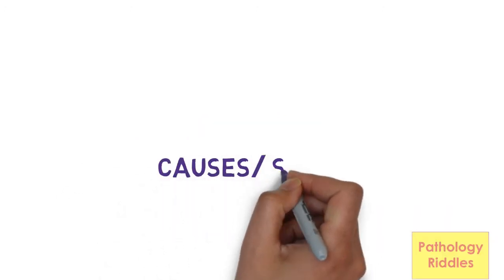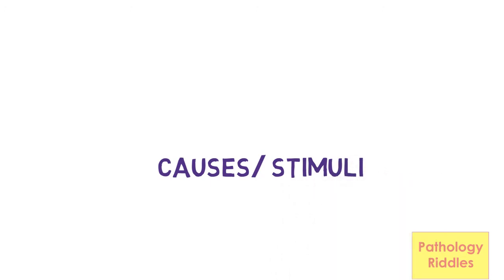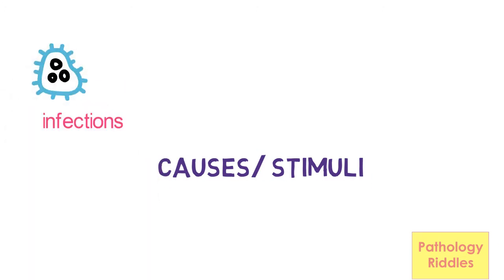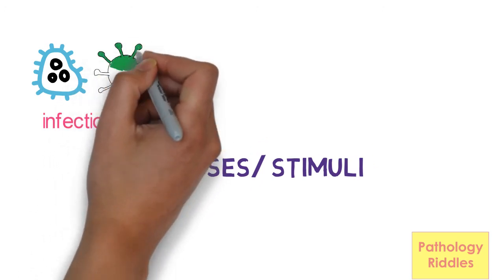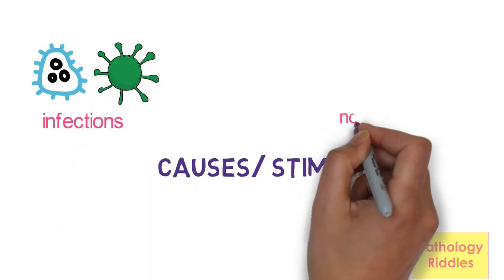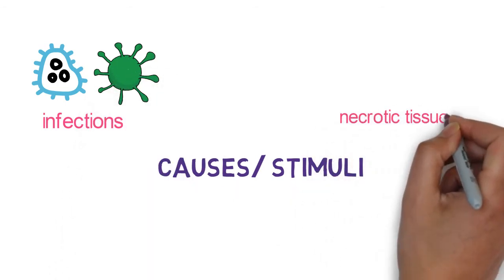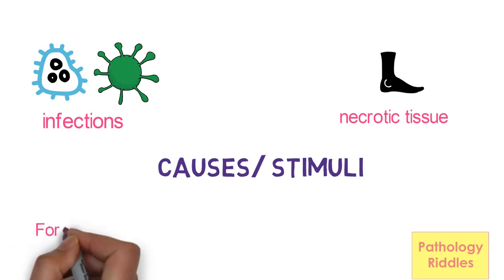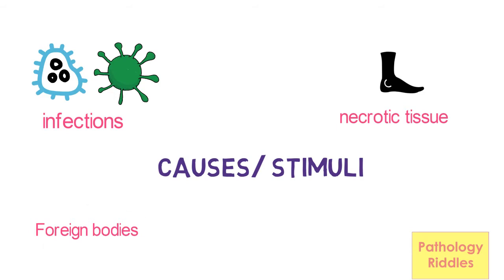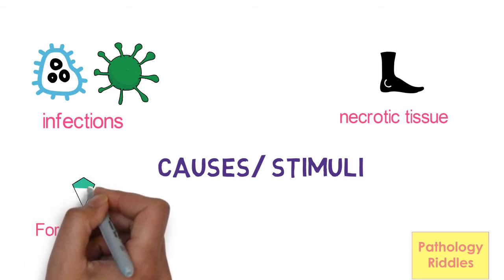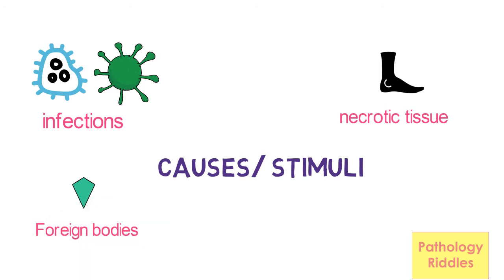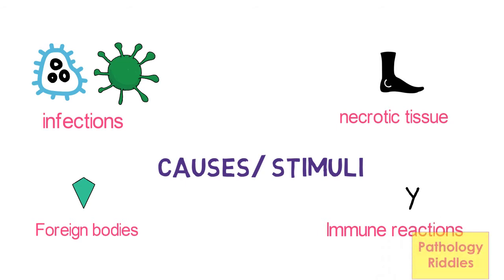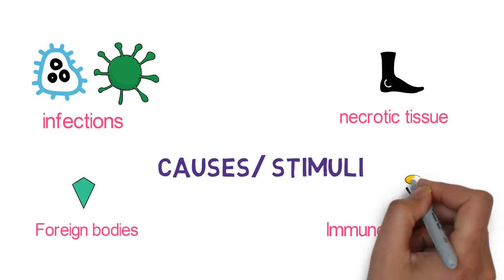Next we shall know what are the causes or stimuli of inflammation. It could be infections — maybe bacterial, viral, fungal, parasitic or even microbial toxins. The second cause is tissue necrosis; molecules released from necrotic cells trigger inflammation. Next are foreign bodies like dirt, sutures, or endogenous substances in large amounts like urate crystals in gout, cholesterol crystals in atherosclerosis, and lipids in metabolic syndrome.